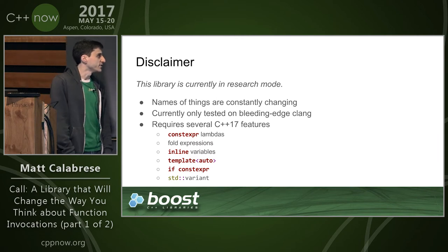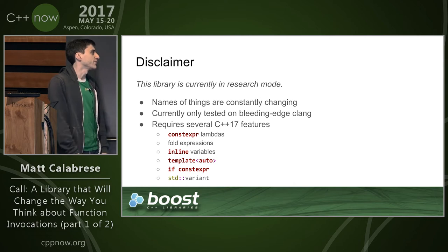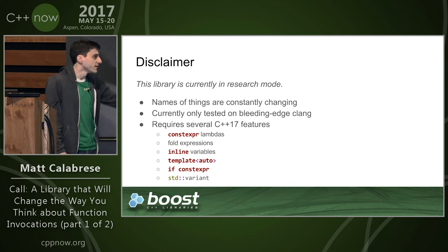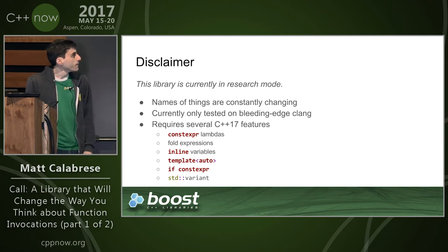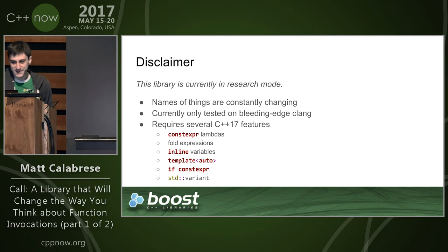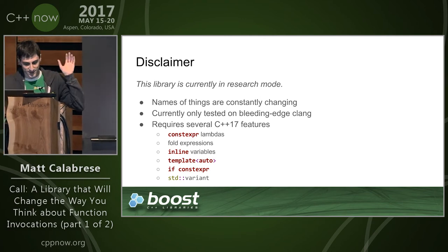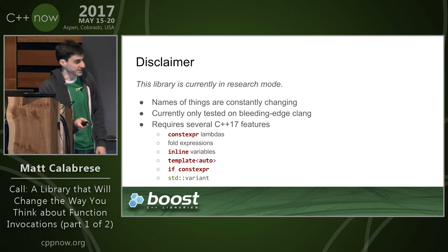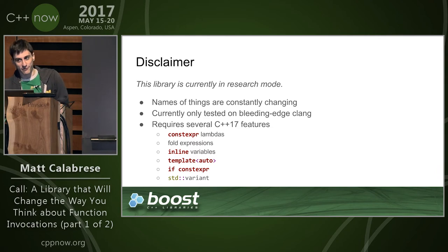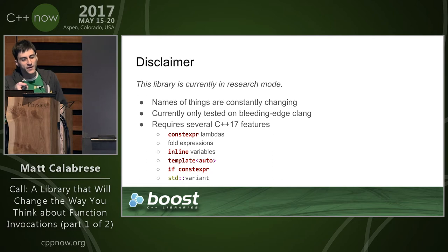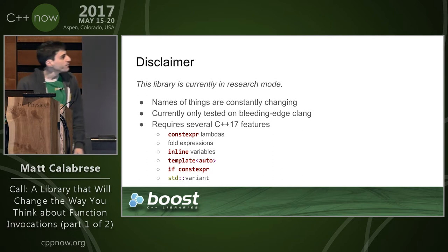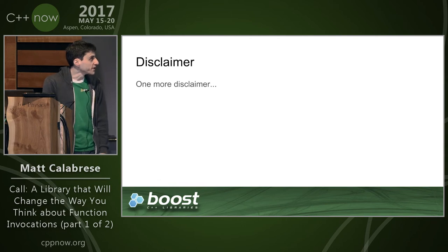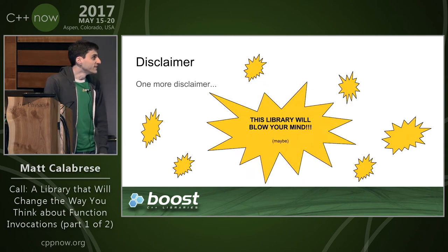This library currently requires various C++17 features such as constexpr lambdas, fold expressions, inline variables, template auto, and if constexpr. std::variant is an optional requirement, but if you're not using std::variant there's not much use to this library. An additional disclaimer: this session is slotted for two full sessions — a full three-hour talk. Originally it was going to be 90 minutes, and I do not think I'm going to be able to take up a full three hours.